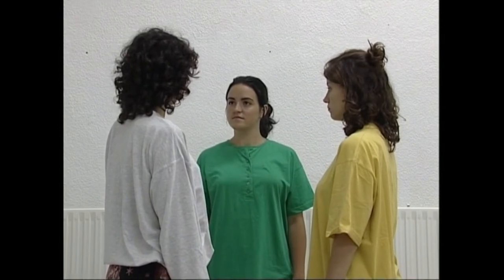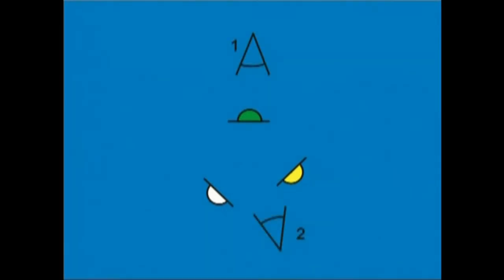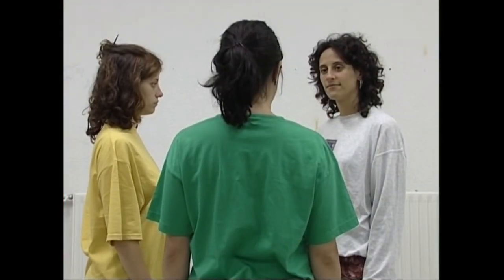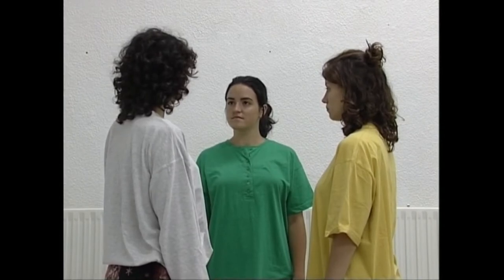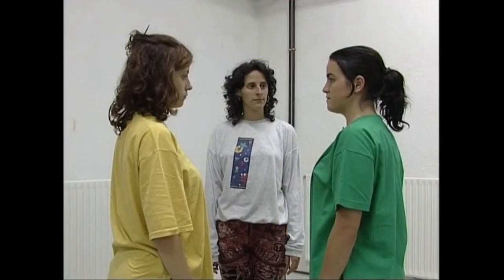Lerro berean dauden iru aktoreak ele bat osatzen dutenean, bi aukera ditugu eskena filmatzeko. Batetik, aktore pibota koadroaren alde banatan kokatuz, ondoren ikusiko ditugun kameraren kokaguneetatik hartutako taldeko planoetan. Eta bestetik, aktore pibota koadroaren erdian kokatuz, ondoren ikusiko ditugun kameraren kokaguneetatik hartutako taldeko planoetan.